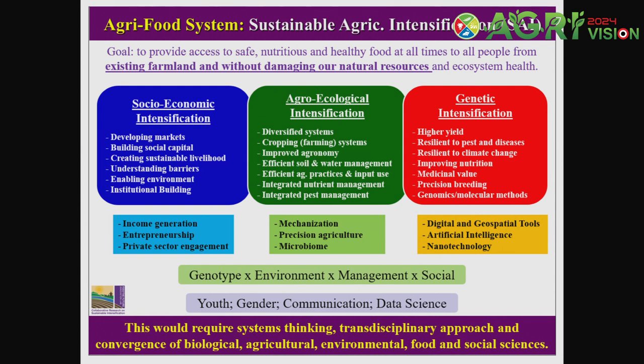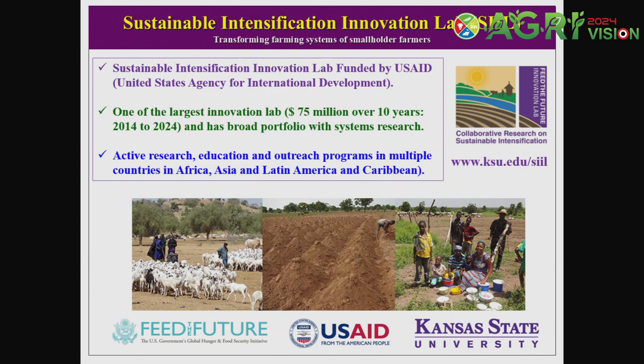Innovative tools like digital, geospatial, artificial intelligence, nanotechnology, mechanization, precision agriculture, microbiome, income generation, and entrepreneurship are components of all three aspects. In brevity, this gives you the interaction between genotype by environment by management by social sciences — G by E by M by S interaction. Oftentimes we only do two or three of the four, but we always miss the most important component: the social science piece. Gender, youth, communication, and data science are integral parts of that.